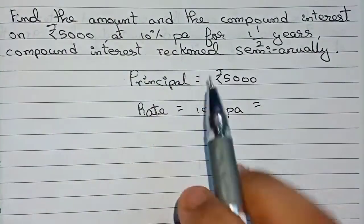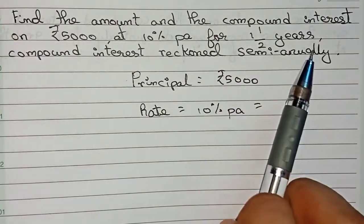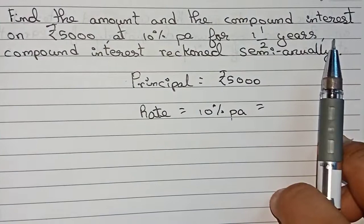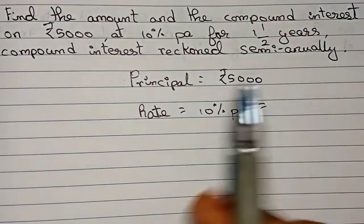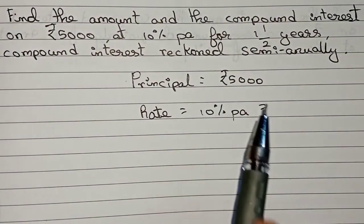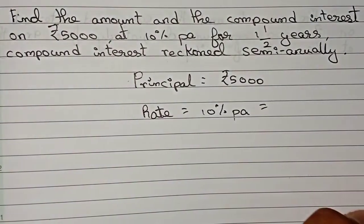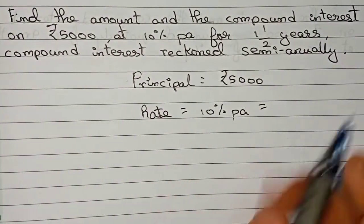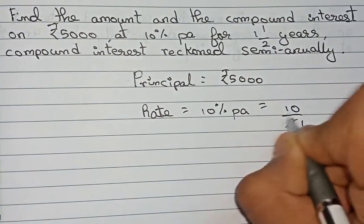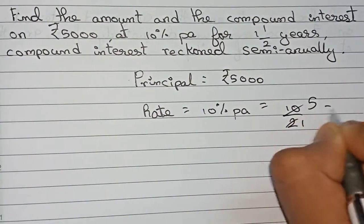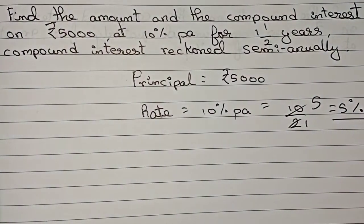The compound interest is compounded semi-annually, meaning interest is calculated every six months. So if ten percent is the rate for one year, we halve it: ten divided by two gives five percent per half year. We will use five percent as our rate.